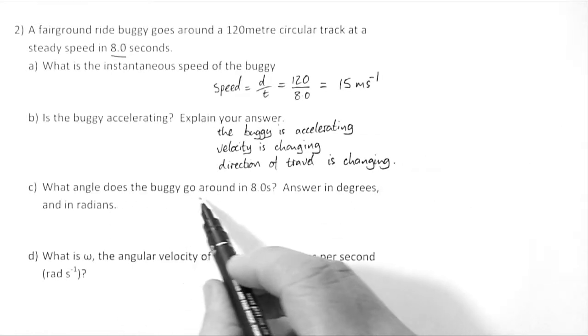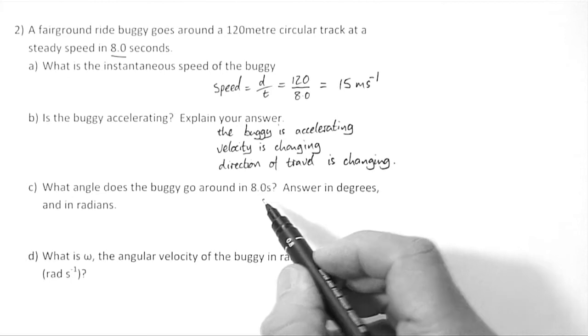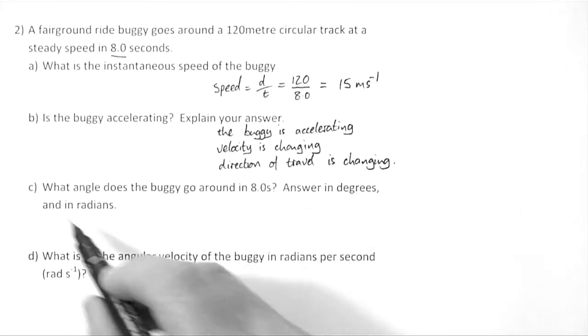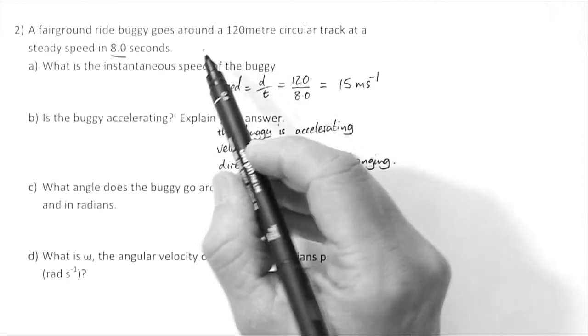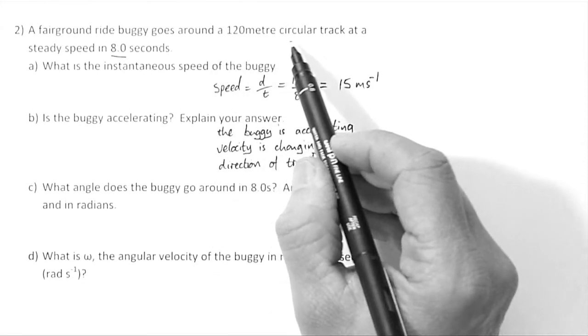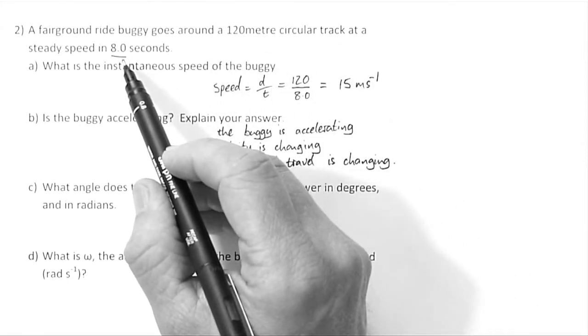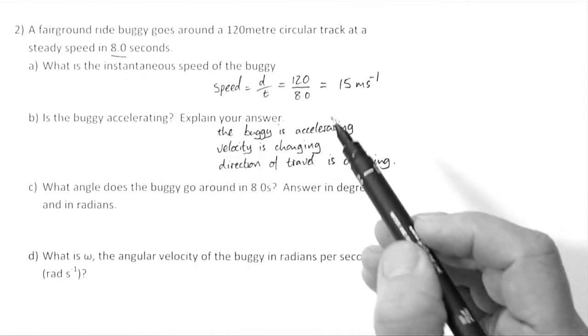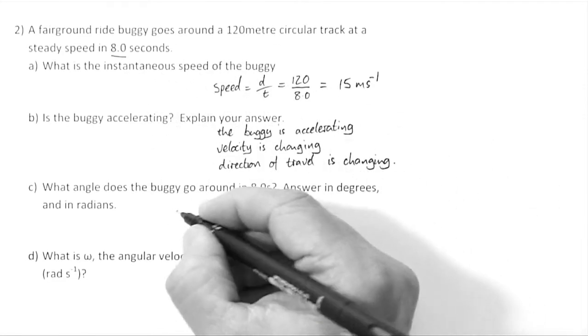What angle does the buggy go around in 8 seconds? Answer in degrees and in radians. It goes all the way around the 120 metre circular track in 8 seconds. So all the way around is 360 degrees.